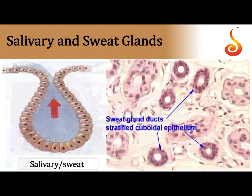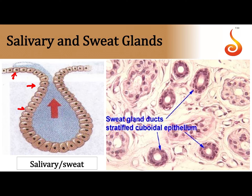What if a gland is made up of many many cells? In the previous slide we saw one single cell performing the role of secretion. When many cells group together and pour out a secretion — as seen in the salivary gland and in the sweat gland — it is called a multicellular gland.